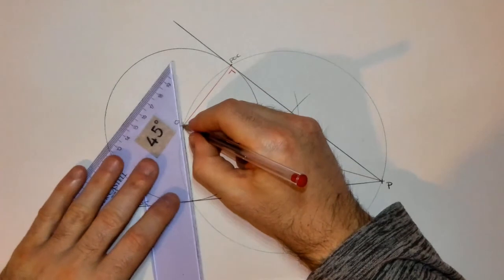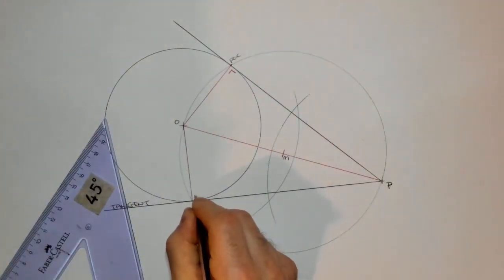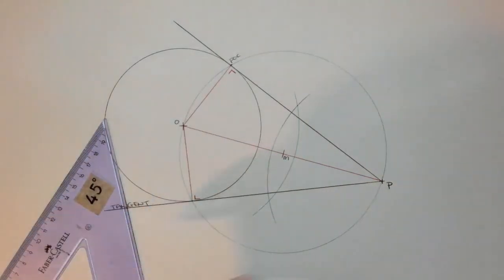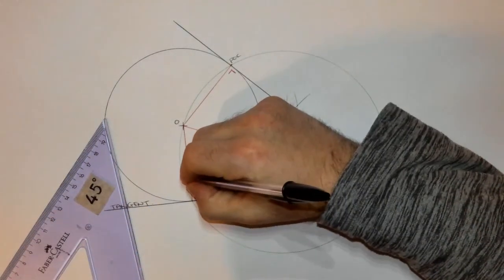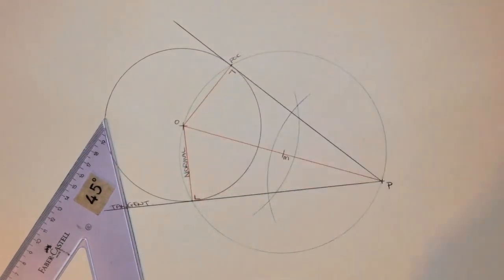Likewise on the opposite side. That line is actually what's known as a normal. So we have a tangent and a normal.